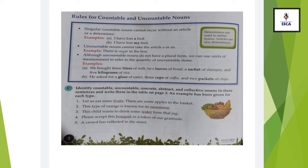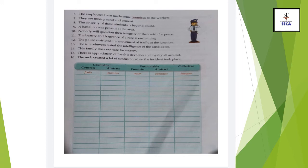Number three: water. Water is not countable — it is uncountable but it is concrete, so you put this noun in the column of uncountable concrete. Similarly, you have to complete all these sentences and put all the noun kinds according to their category on the next page. Here you can see sentences 6 through 16 — all must be categorized by countable, uncountable, and collective nouns and placed one by one into the given column.